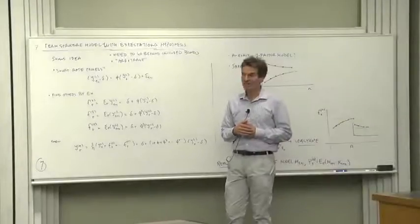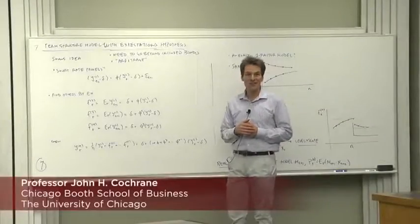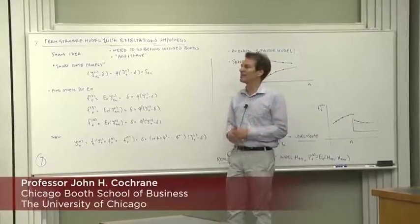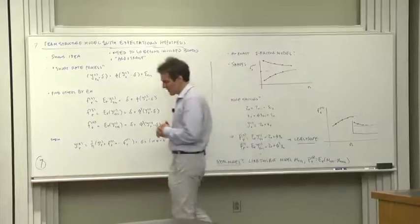So now, at last, we get to the main course: term structure models, the thing that for bonds acts like Black-Scholes did for options.